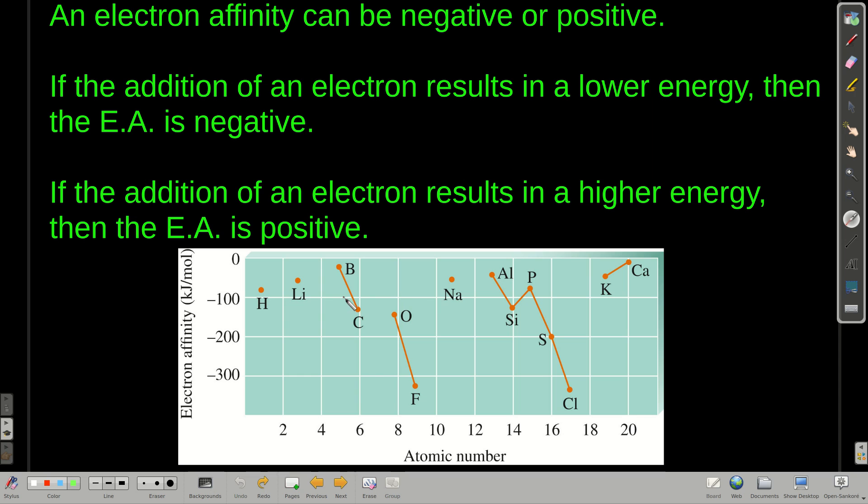There's a general trend. It's not nearly as distinct as it is for first ionization energies, but in general we can say that electron affinity becomes more negative as you go to the right in a period of the periodic table. More energy is released. And to a smaller extent, it becomes more negative as you go up a column. We can explain this generally in terms of effective nuclear charge. The greater the effective nuclear charge, the more energy is released when you bring that negatively charged electron up to the positive charge from the nucleus.